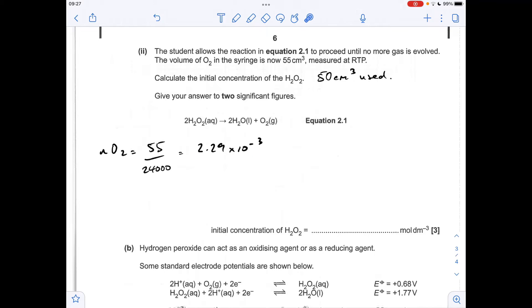So if we apply the mole ratio, there must have been twice as many moles of hydrogen peroxide in that 50 cm cubed. So that's coming out at 4.58 times 10 to the minus 3.